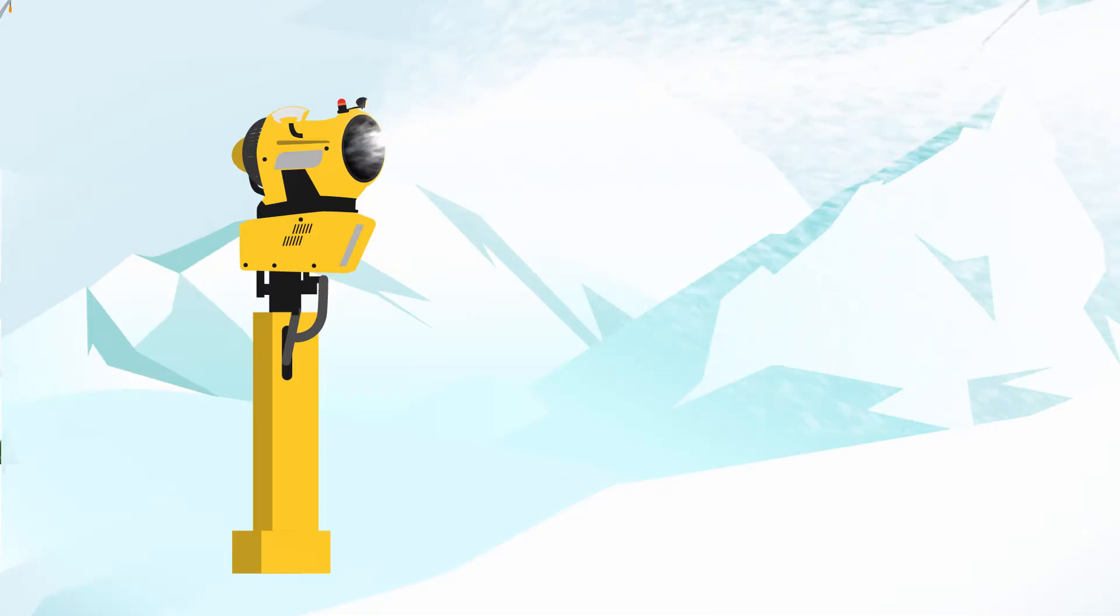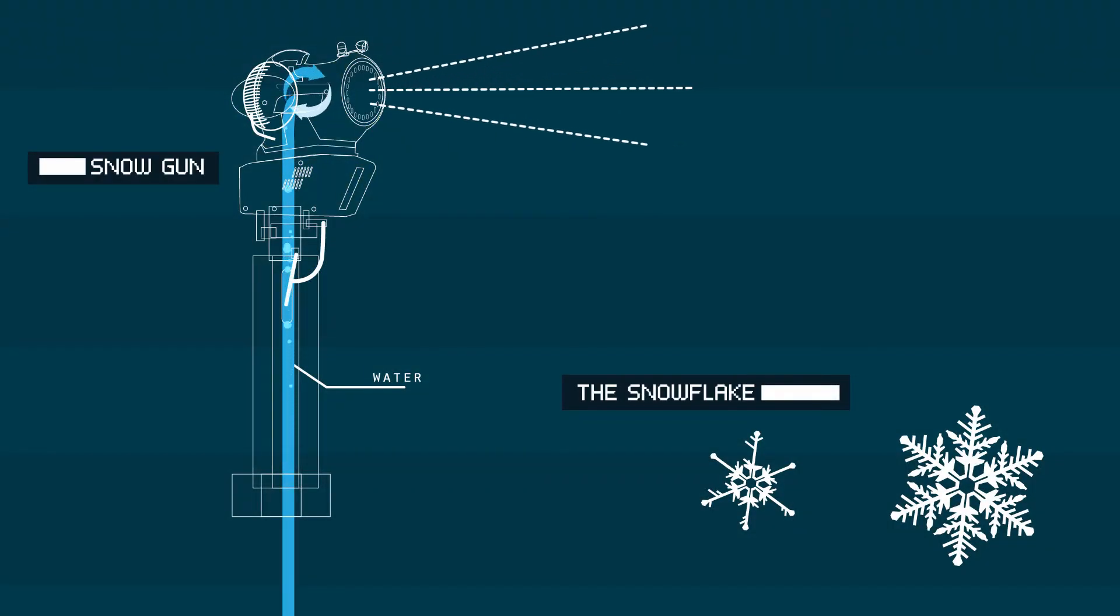Snow guns simulate natural snowfall. Here's how. A mixture of water and compressed air is produced, which expands in the atmosphere, allowing nuclides to develop.